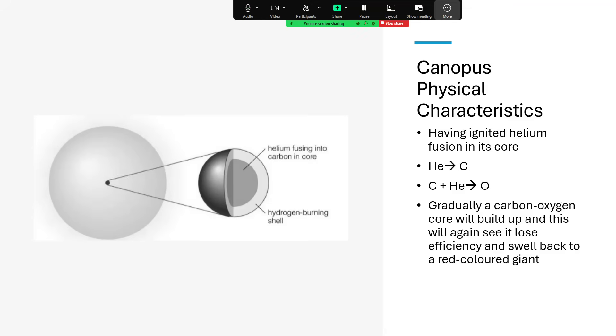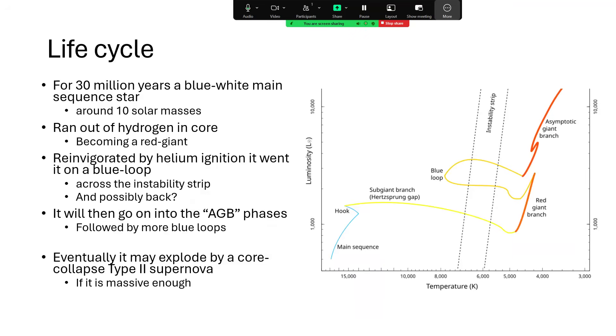And for that reason, it is on what we call a blue loop. So the life cycle of Canopus started around 30 million years or so ago, and it continued burning away, turning hydrogen to helium as a blue-white main sequence star around about 10 solar masses.